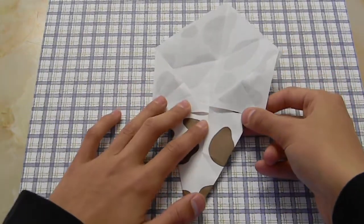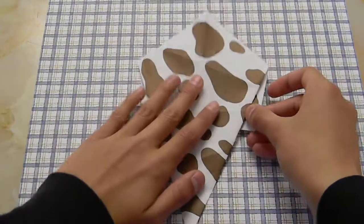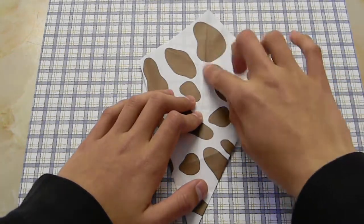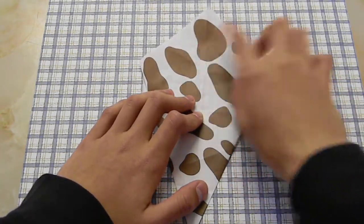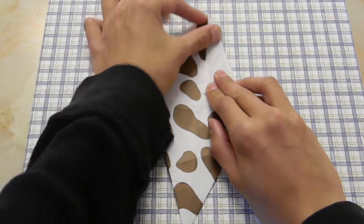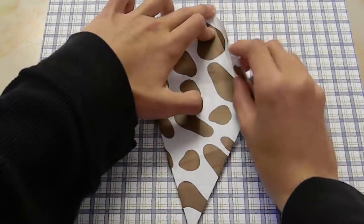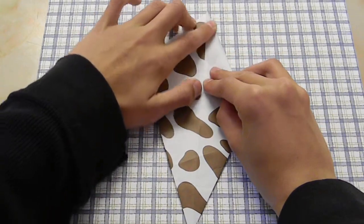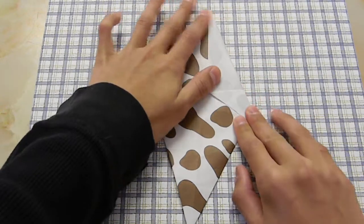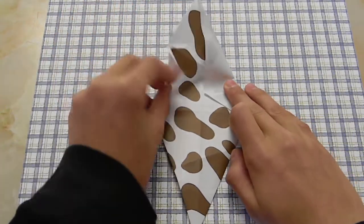Now flip it over and pull this flap down. You're going to make it match this crease. Repeat the process.